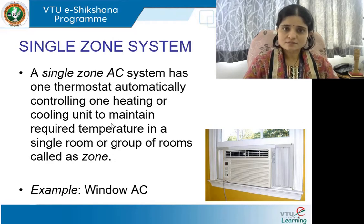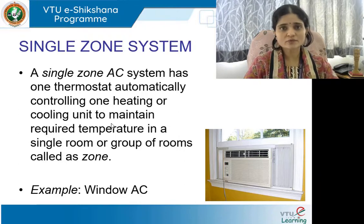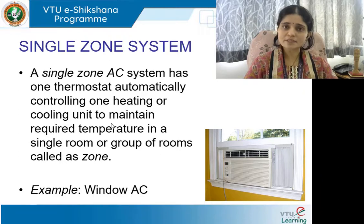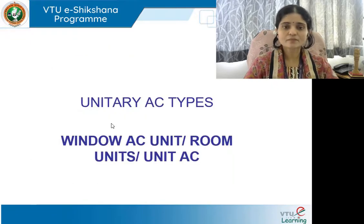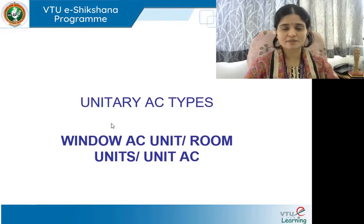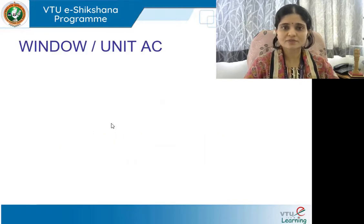A single zone AC system has one thermostat automatically controlling one heating or cooling unit to maintain the required temperature in a single room or group of rooms. The very basic fundamental unit is the window AC or the unit AC. It applies only to a single room. We will now understand the working of a window air conditioning unit, which is colloquially also called a room unit or unit AC — the word 'unit' referring to a single entity.